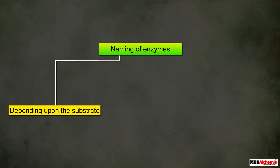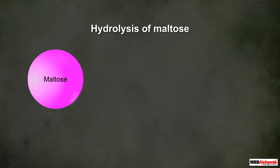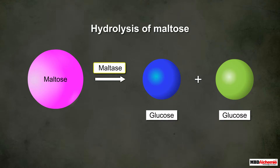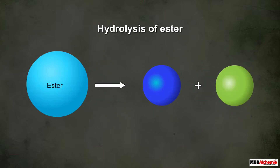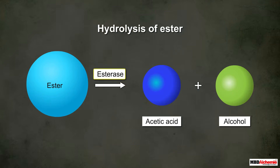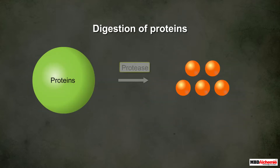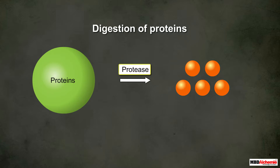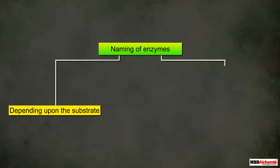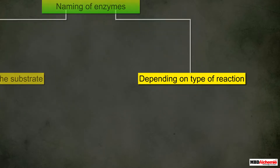Due to the specificity in their substrates, enzymes are usually named on the basis of the substrate on which they work. For example, the enzyme involved in the hydrolysis of maltose into two glucose units is named maltase. Similarly, the enzyme involved in hydrolysis of ester into acetic acid and alcohol is named esterase. The enzyme that breaks down proteins during digestion is named protease.